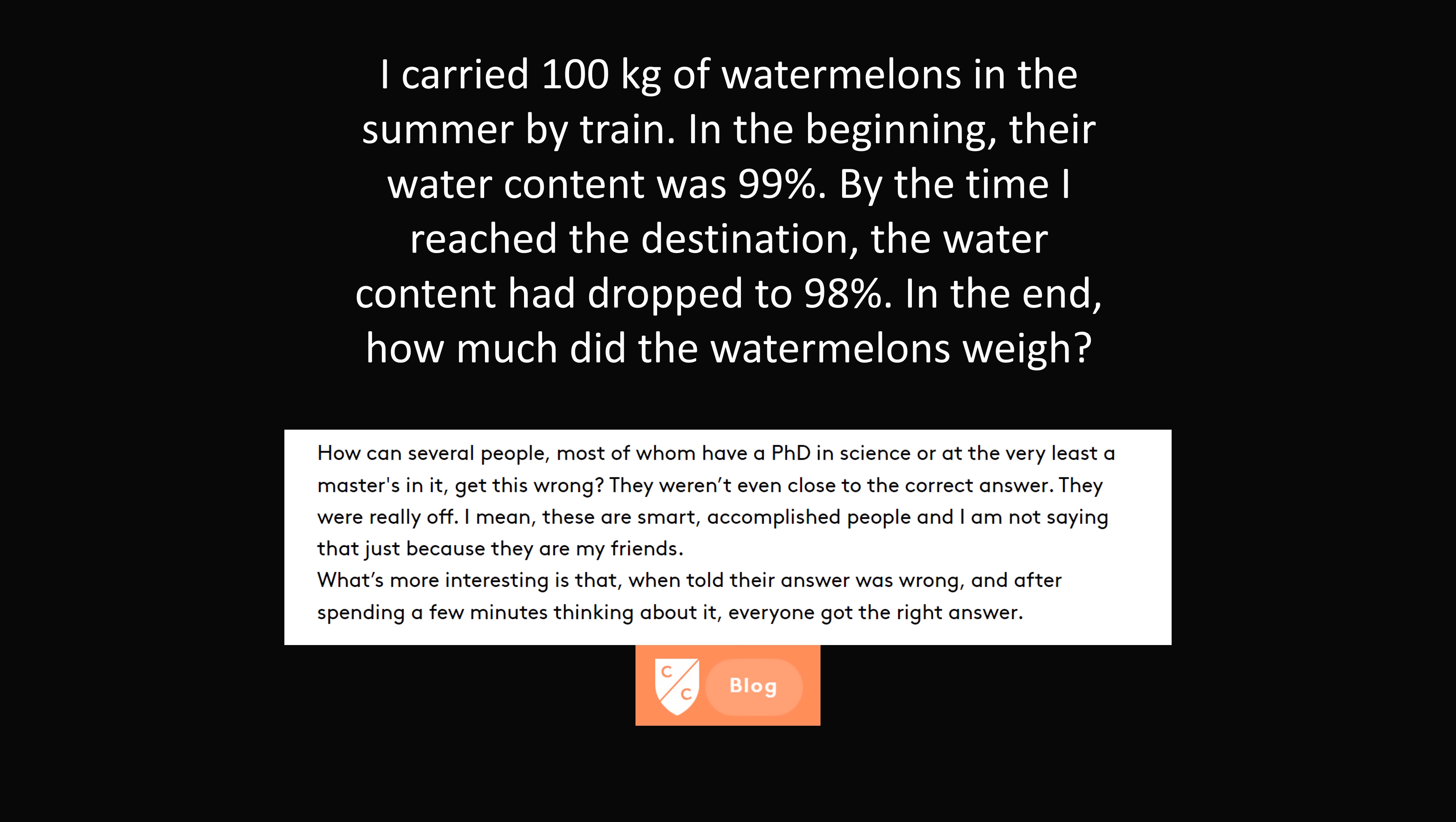And they all came up with the wrong answer of 99 kilograms. The post wondered how can several people, most of whom have a PhD in science or at the very least a master's in it, get this wrong? They weren't even close to the correct answer. What's more interesting is that when told their answer was wrong and after spending a few minutes thinking about it, everyone got the right answer.